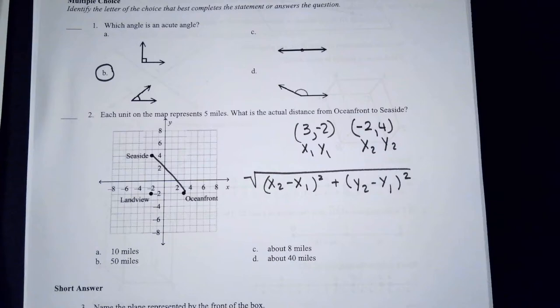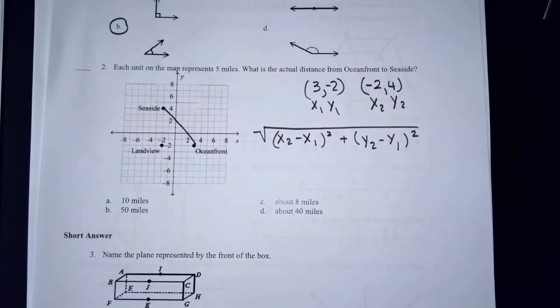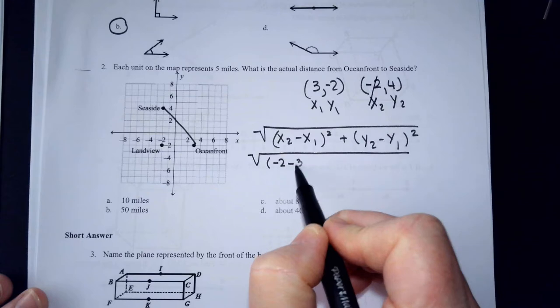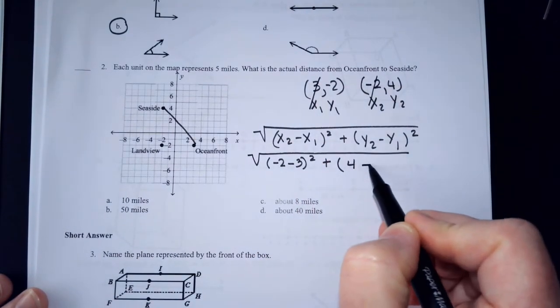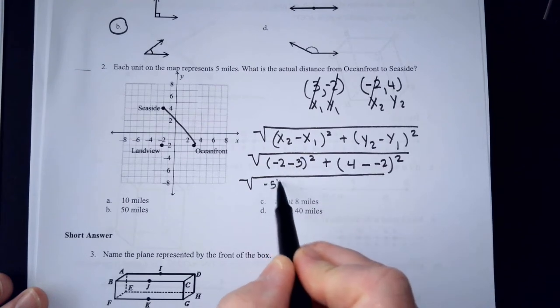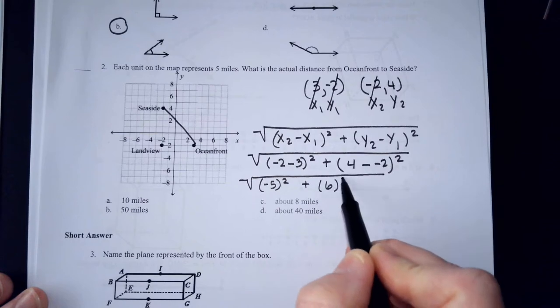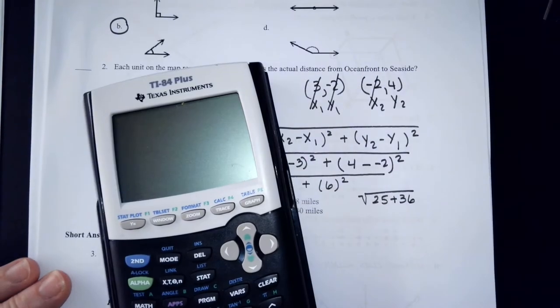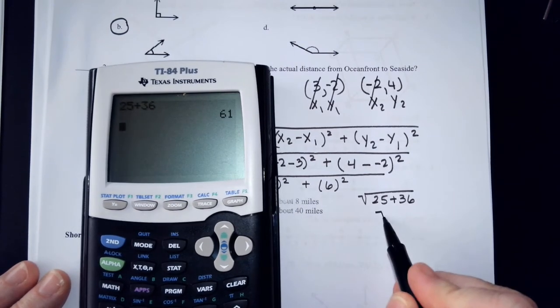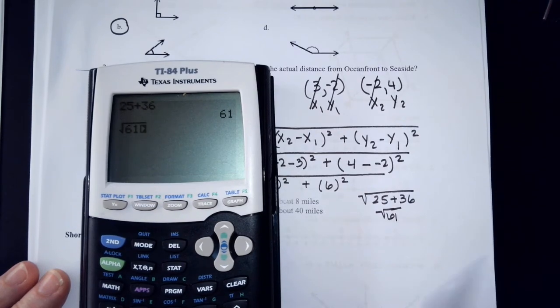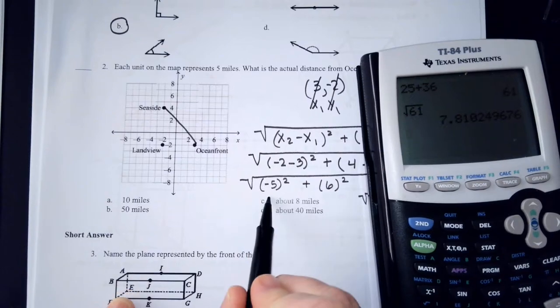Now, you might have used the Pythagorean theorem. We're going to plug in our values, and we're going to have negative 2 minus 3, all squared, plus 4 minus negative 2, all squared. Do the part in the parentheses. This is negative 5, all squared. This is going to be 6, all squared. Square those. You're going to get 25 and 36, and when you add 25 and 36, 61, and the square root is 61.